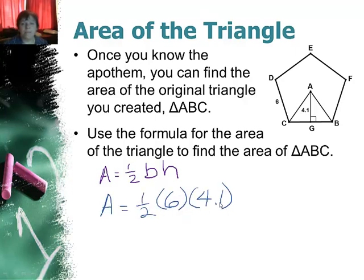1 half of 6 times 4.1, 3 times 4.1, I'm getting 12.3 units squared. So that's the area of the triangle.